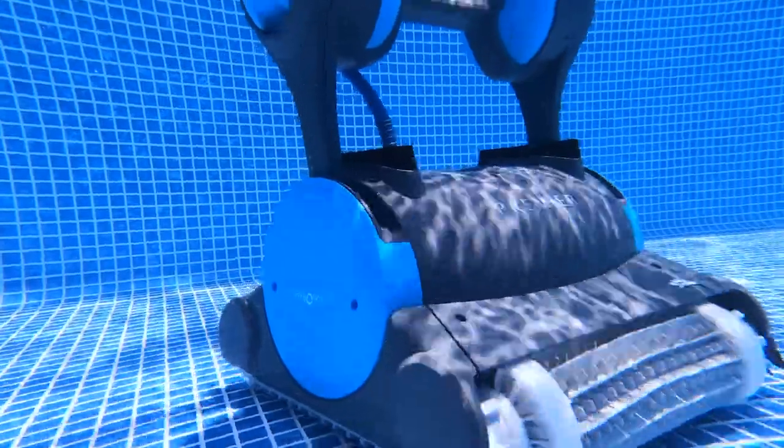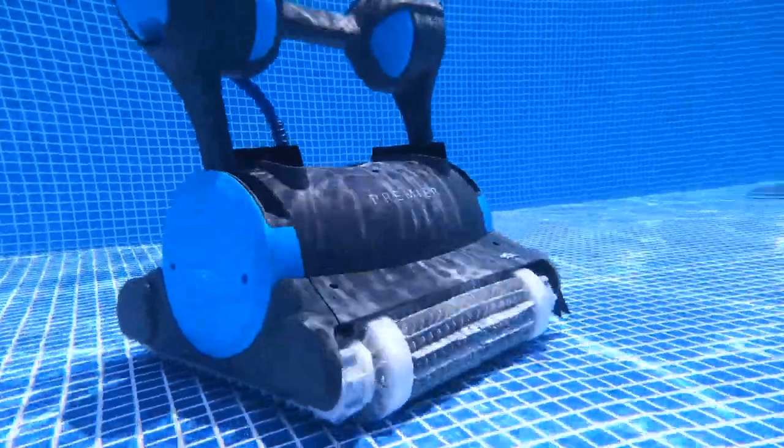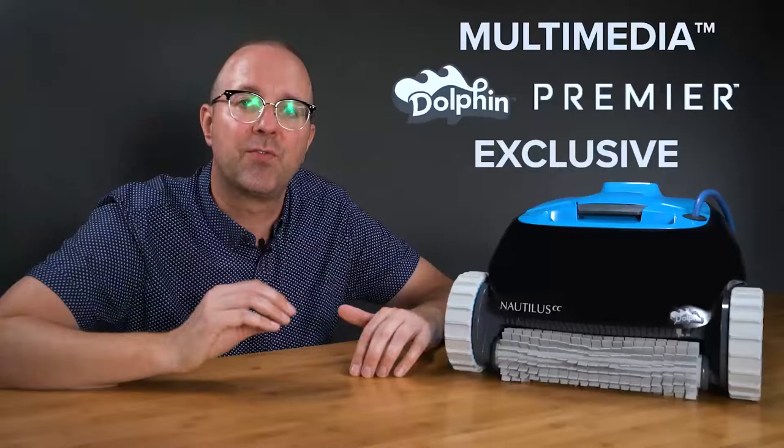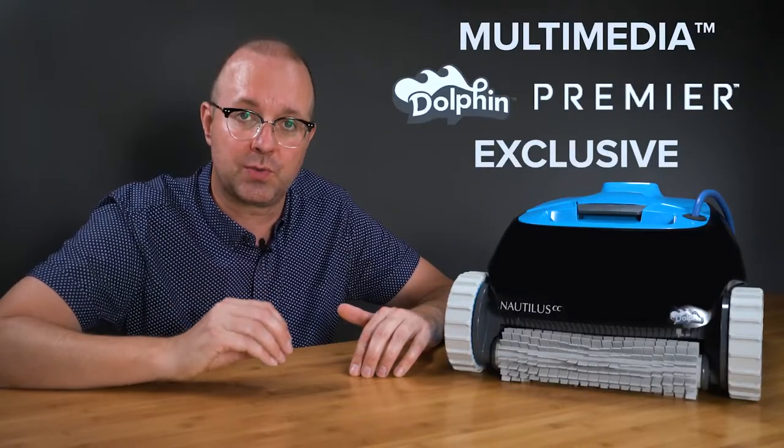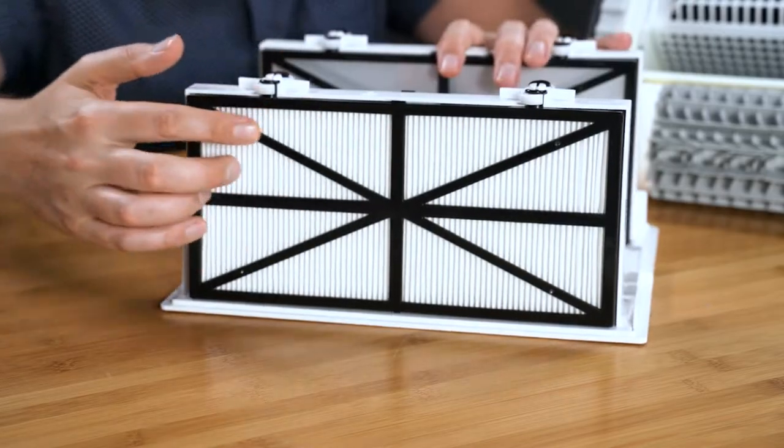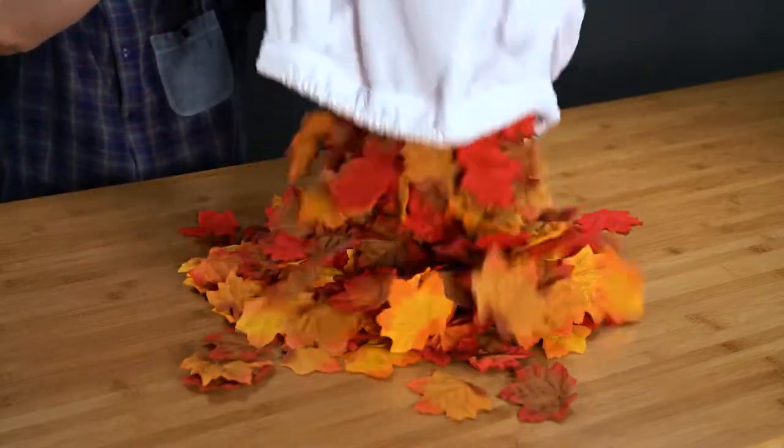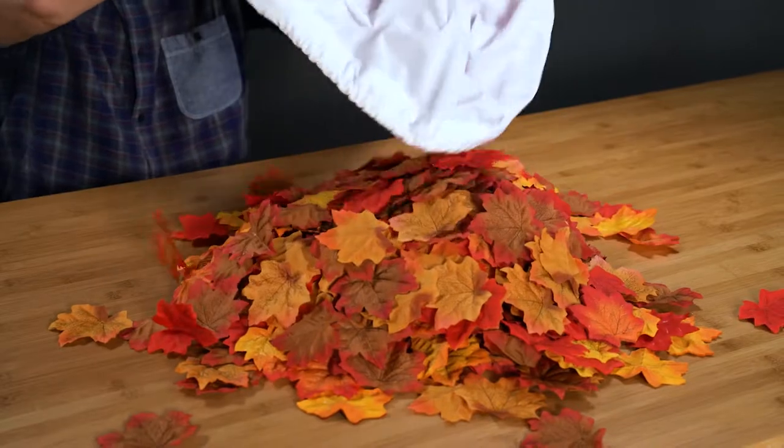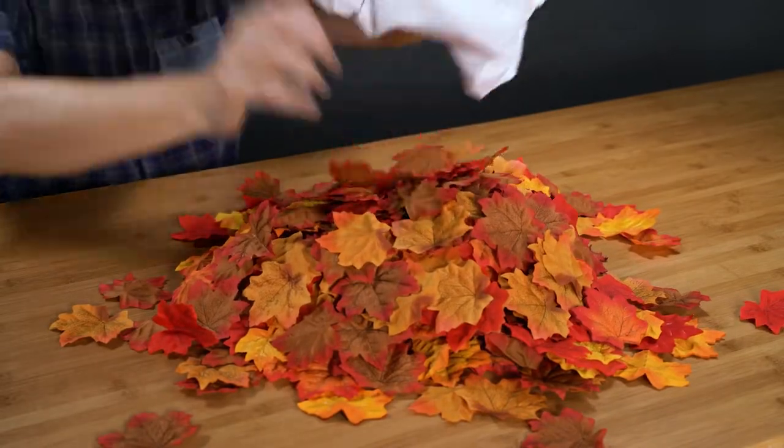If you have a lot of leaves in your pool, I would recommend the Dolphin Premier. The Premier has multimedia filtration with four different filter options to choose from: the standard fine filter, the Ultra Fine Filter, the optional disposable debris bag, and my personal favorite, the oversized leaf bag. The leaf bag can hold a large amount of leaves, twigs, and debris.